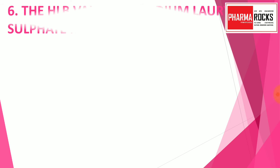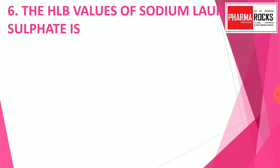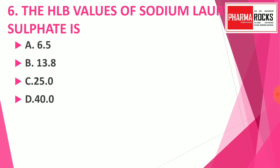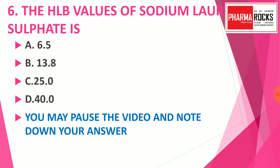Question number 6: The HLB value of sodium lauryl sulfate is — option A: 6.5, option B: 13.8, option C: 25.0, option D: 40. You may pause the video and note down your answer. The correct answer is option D: 40. The HLB value of SLS is the highest, and it is 40.